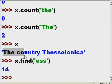So 0, 1, 2, 3, 4, 5, 6, 7, 8, 9, 10, 11, 12, 13, and then here we go, 14, position 14, ess begins. So find is going to tell me the start position of the target string. Count will tell me how many occurrences take place in that string.